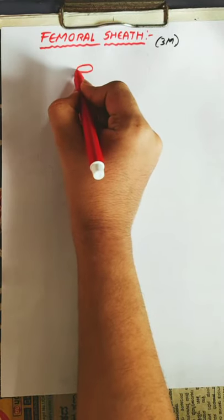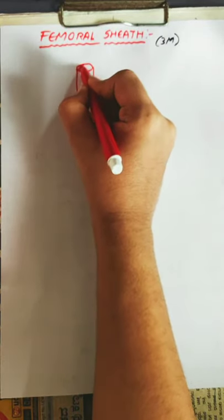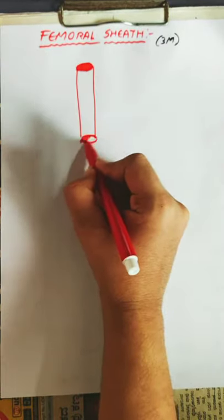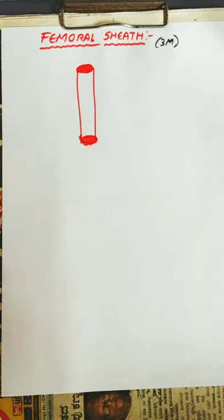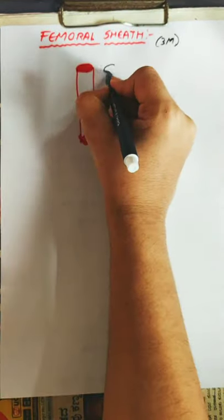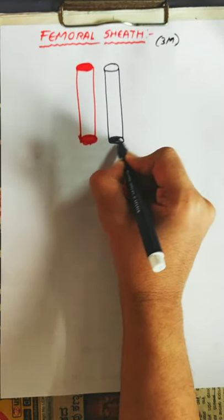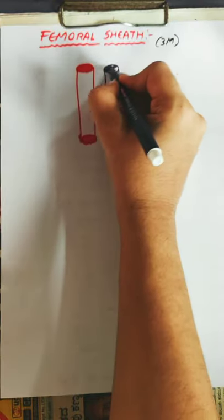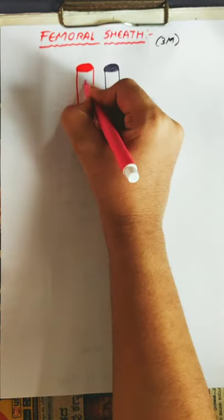First, I'll draw the femoral artery. Consider this as the femoral artery. I'll also draw the femoral vein. This is the femoral vein. You can also see the genito-femoral nerve passing here.